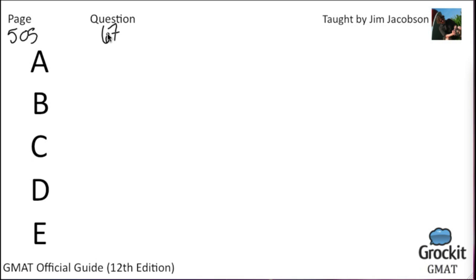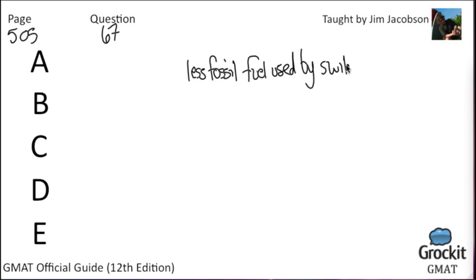Whenever you have an argument that they don't summarize for you in the question, we need to summarize it ourselves so we can more accurately judge answer choices. The argument says that less fossil fuel is being used as a result of this switch — even if it's a partial switch. In order to strengthen that, we need to find another way to confirm that less fossil fuel is actually being used.